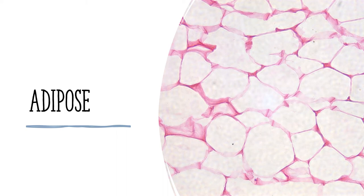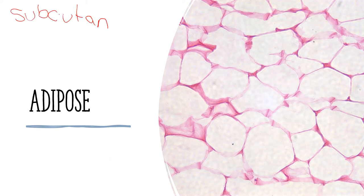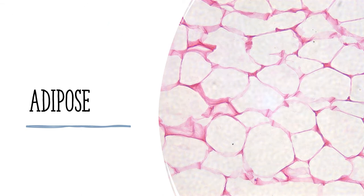We then moved on to adipose tissue, also on page 9 in your coloring book. It is what holds our fat, making up what we call our subcutaneous layer — sub meaning under, and cutaneous meaning your skin. So we all have a layer of fat underneath our skin; this is where we find our adipose tissue. Your coloring book says it's an aggregation of fat cells. It does have fibers in there to help hold everything together, and it's used as a source of fuel, for padding, and for insulation.